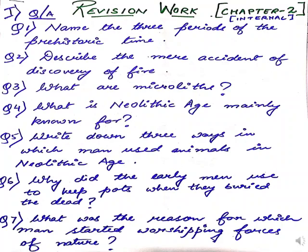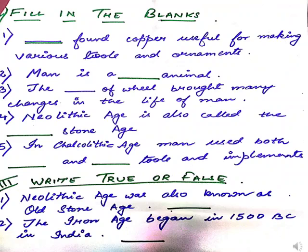In this slide you will see some internal fill in the blanks and true or false. You also have to copy these down in your notebooks. Number 1: dash found copper useful for making various tools and ornaments — the answer is artisans, A-R-T-I-S-A-N-S. Number 2: man is a dash animal — man is a social animal. Number 3: the dash of wheel brought many changes in the life of man — the answer is invention. Number 4: Neolithic Age is also called the dash stone age — new stone age. In the Chalcolithic Age, man used both dash and dash tools and implements — the answer is stone and copper.